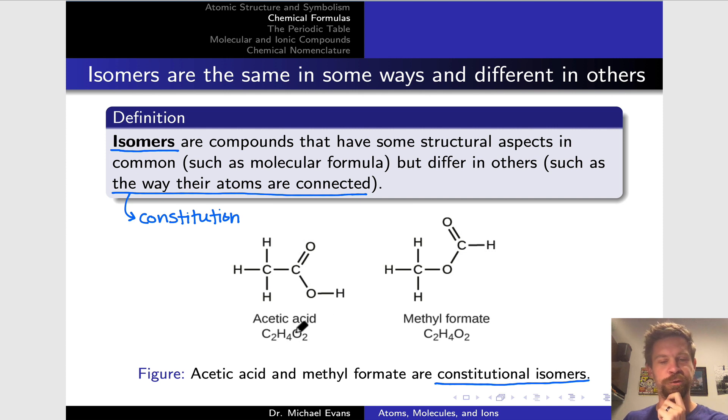Examples of constitutional isomers are shown on this slide. Acetic acid has the molecular formula C2H4O2. You can verify that by taking a look at the structural formula here. Methylformate also has the molecular formula C2H4O2. It should make sense that the empirical formulas are also the same. The empirical formula of acetic acid is CH2O, and the empirical formula of methylformate is also CH2O. So they have their molecular and empirical formulas in common.